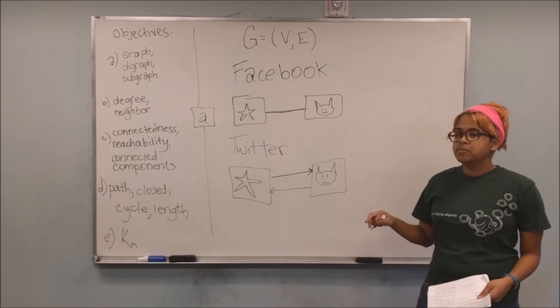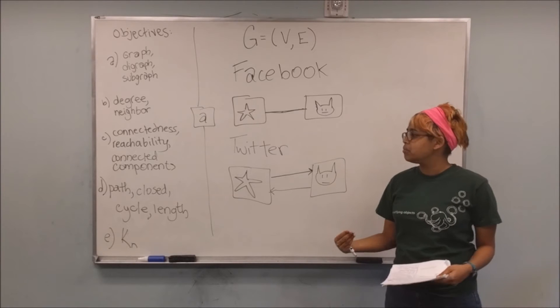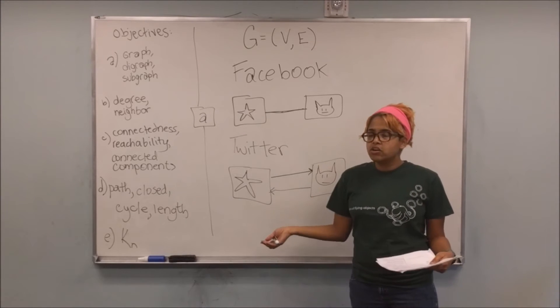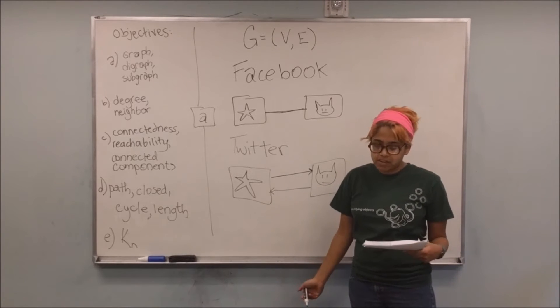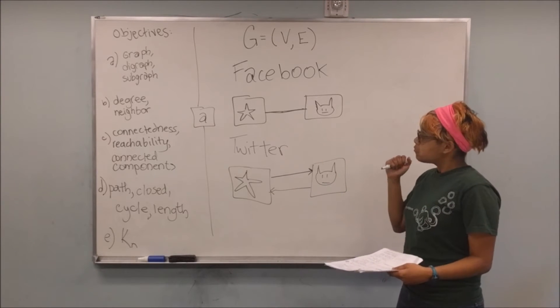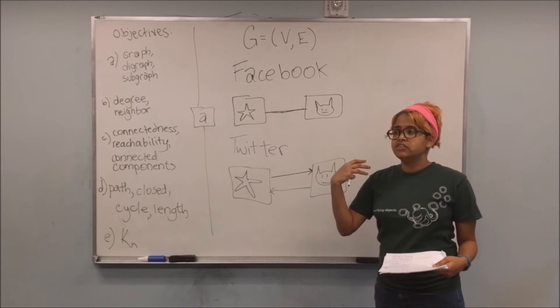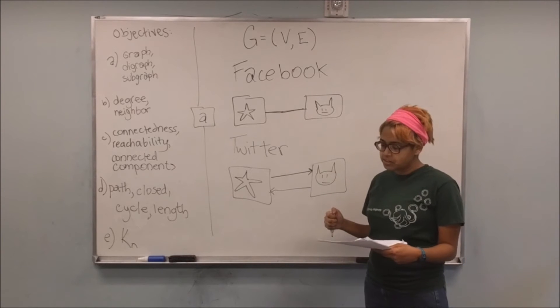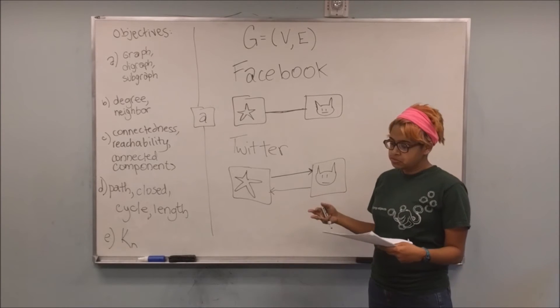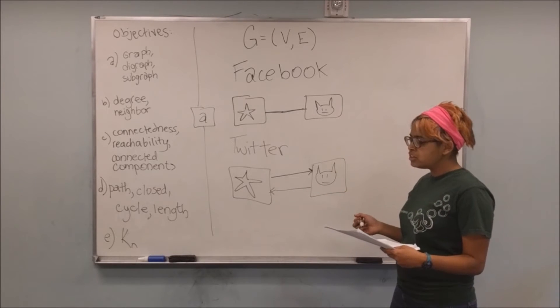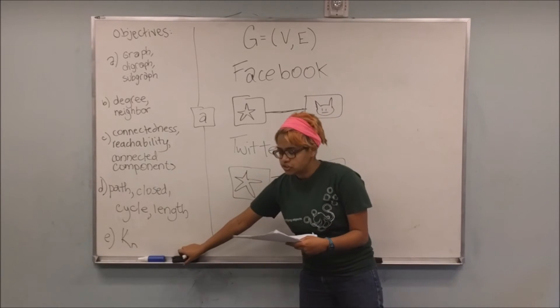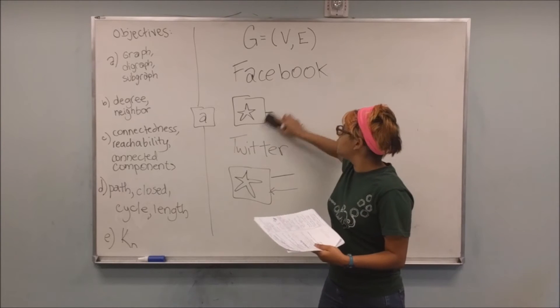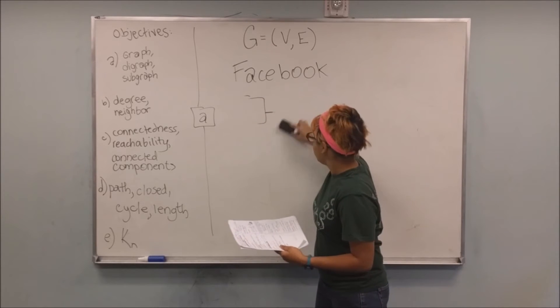So now that we've talked about that, we can kind of go into the math portion and actually talk about definitions. So Facebook is an example of an undirected graph, which we're just going to use the word graph to reference. And a graph is defined by its vertices and its edges. So as you can see, I wrote that at the very top of the board, G equals V,E. The vertices are just going to be a set of nodes. You can call them vertices, you can call them nodes. I don't really care. And it's just a set.